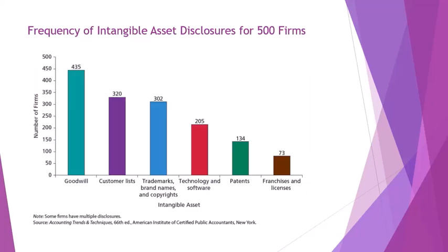A survey of 500 large firms shows how frequently intangible assets appear on balance sheets: 435 of them reported goodwill, and many others carried various intangible assets. Intangible assets are very, very common. In addition to balance sheet reporting, you can often find quite a bit of detail on intangible assets in the financial statement footnote disclosures.